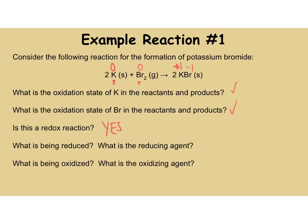Potassium went from zero to plus one, and bromine went from zero to minus one. What is being reduced? Br was reduced — it got more negative, gaining electrons. What was the reducing agent? That was potassium. What's being oxidized? Potassium got more positive — it lost electrons, so potassium was oxidized. What caused this? The bromine. Therefore, bromine is the oxidizing agent.